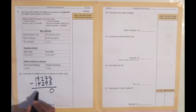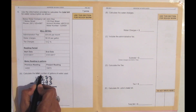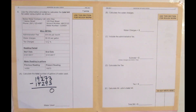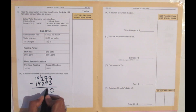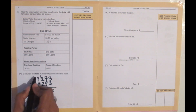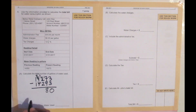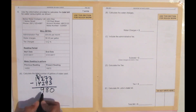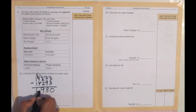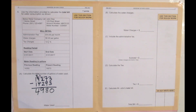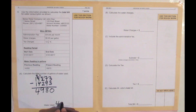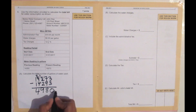Working through the subtraction: 3 minus 3 is 0. 7 from 9 — borrow from the 2; the 2 becomes 1, this becomes 17, and 17 minus 9 is 8. 1 from 2 — borrow from the 9; the 9 becomes 8, this becomes 11, and 11 minus 2 is 9. Then 8 minus 4 is 4. So the answer to A is 4,980 gallons of water used.